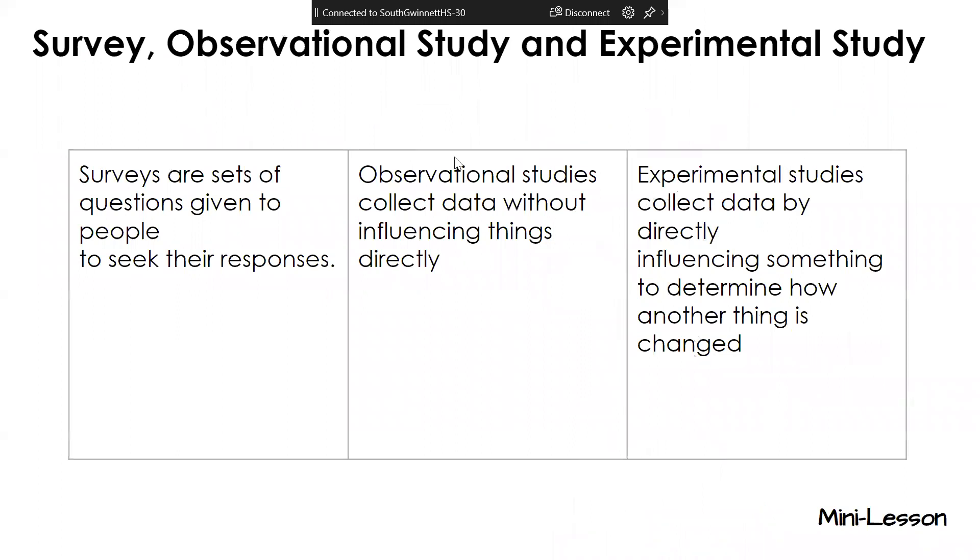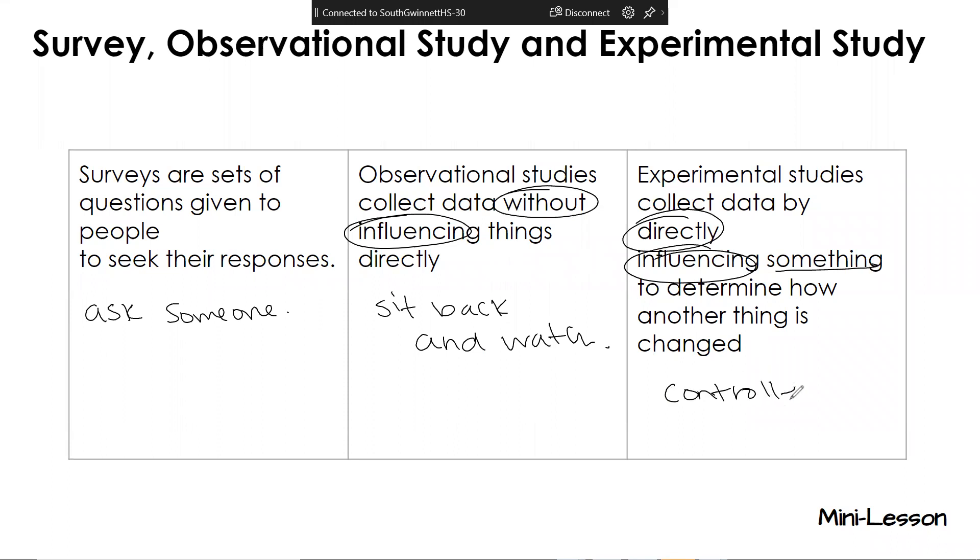So here are the definitions. We got surveys or sets of questions given to people to seek their response. So this is going to be that you're asking someone, whether this be through electronic or paper copy. We have observational studies. That's going to be collect data without influencing things directly. You're going to sit back and watch and collect data. And then experimental studies are going to directly influence something. So this is going to have probably a controlled group and versus the experimental group.